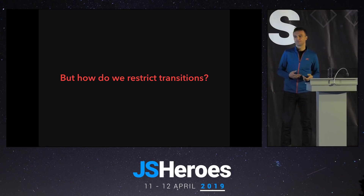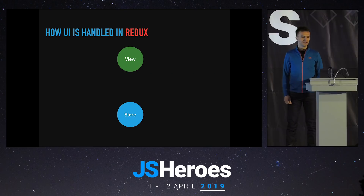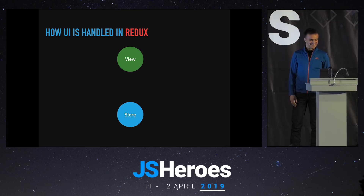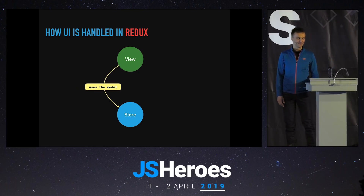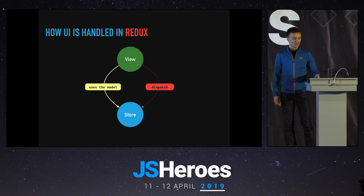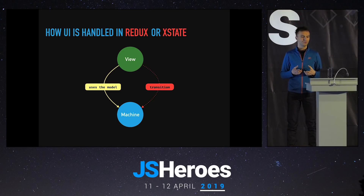But we still don't solve the issue of restricting transitions at compile time. At runtime it should be easy - have a function like 'can I transition from this state to the other?' But it would be nice, since we have types, to restrict transitions. Before we see how we can do that, let's see how UI is handled in Redux. We have the view, which is mostly a React component, and the store. The view is external to the store - it uses its model and dispatches actions to it. The same idea applies with XState, only with different names. The view has no information about the machine from a compile-time, static point of view.